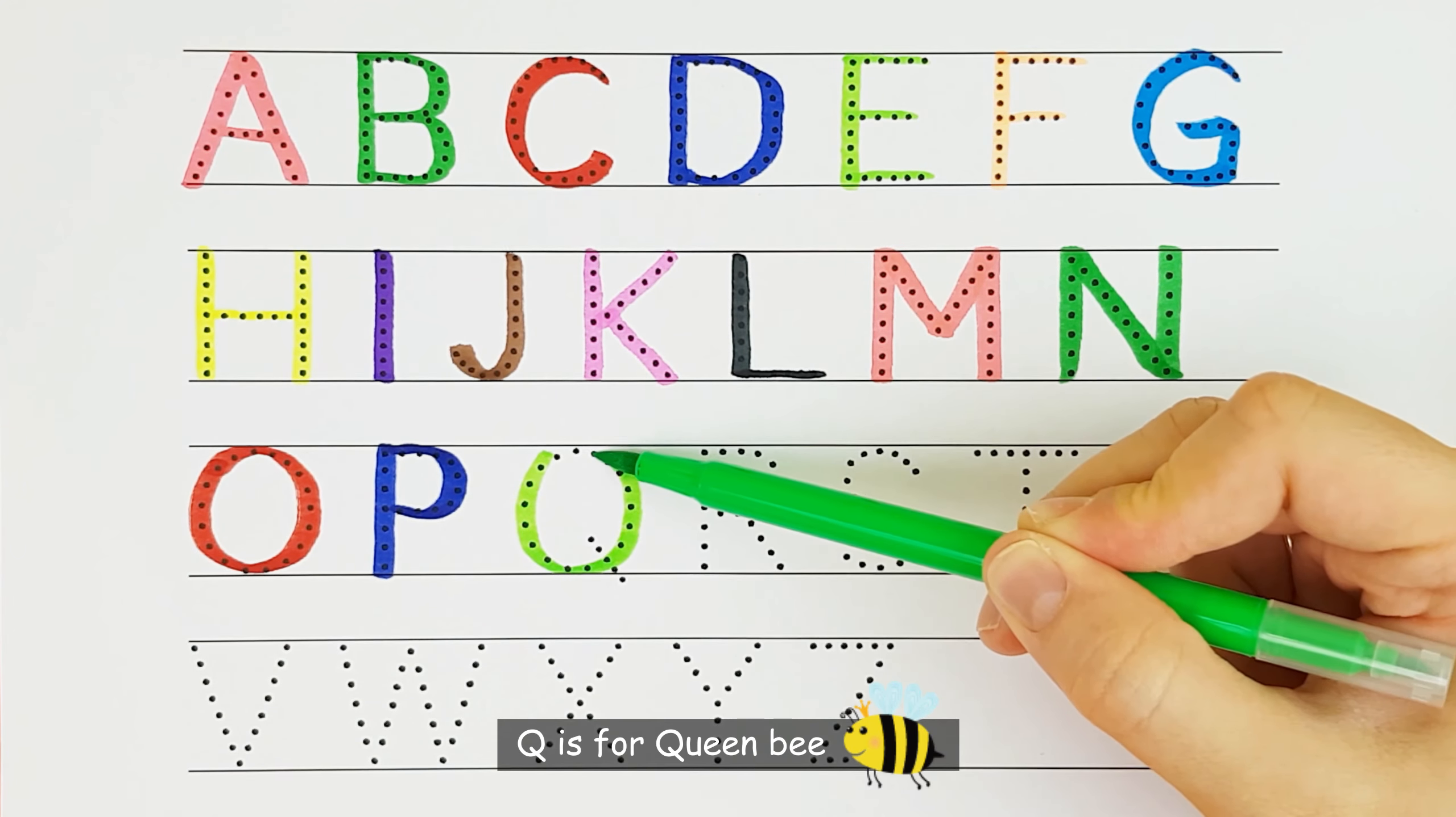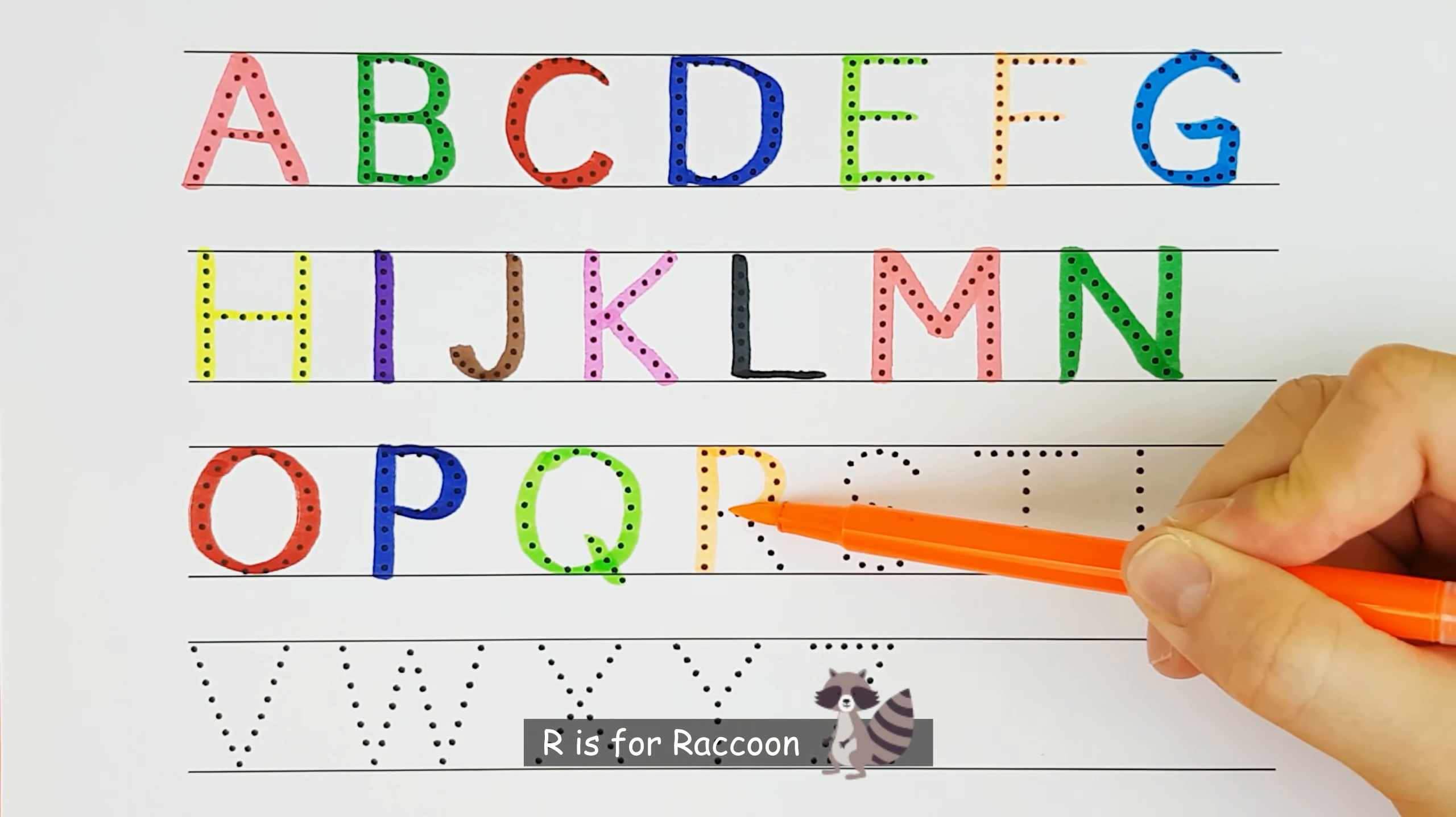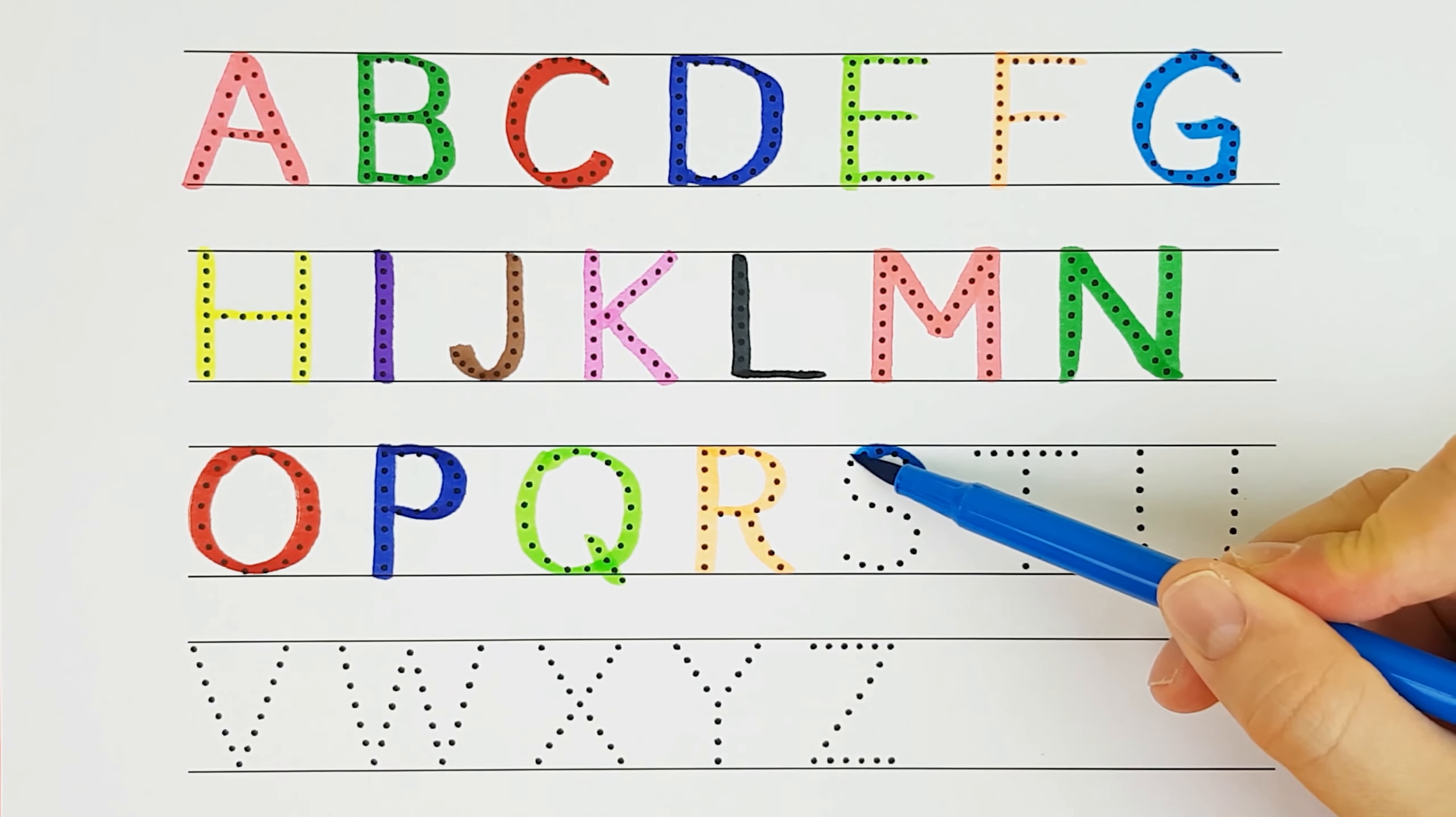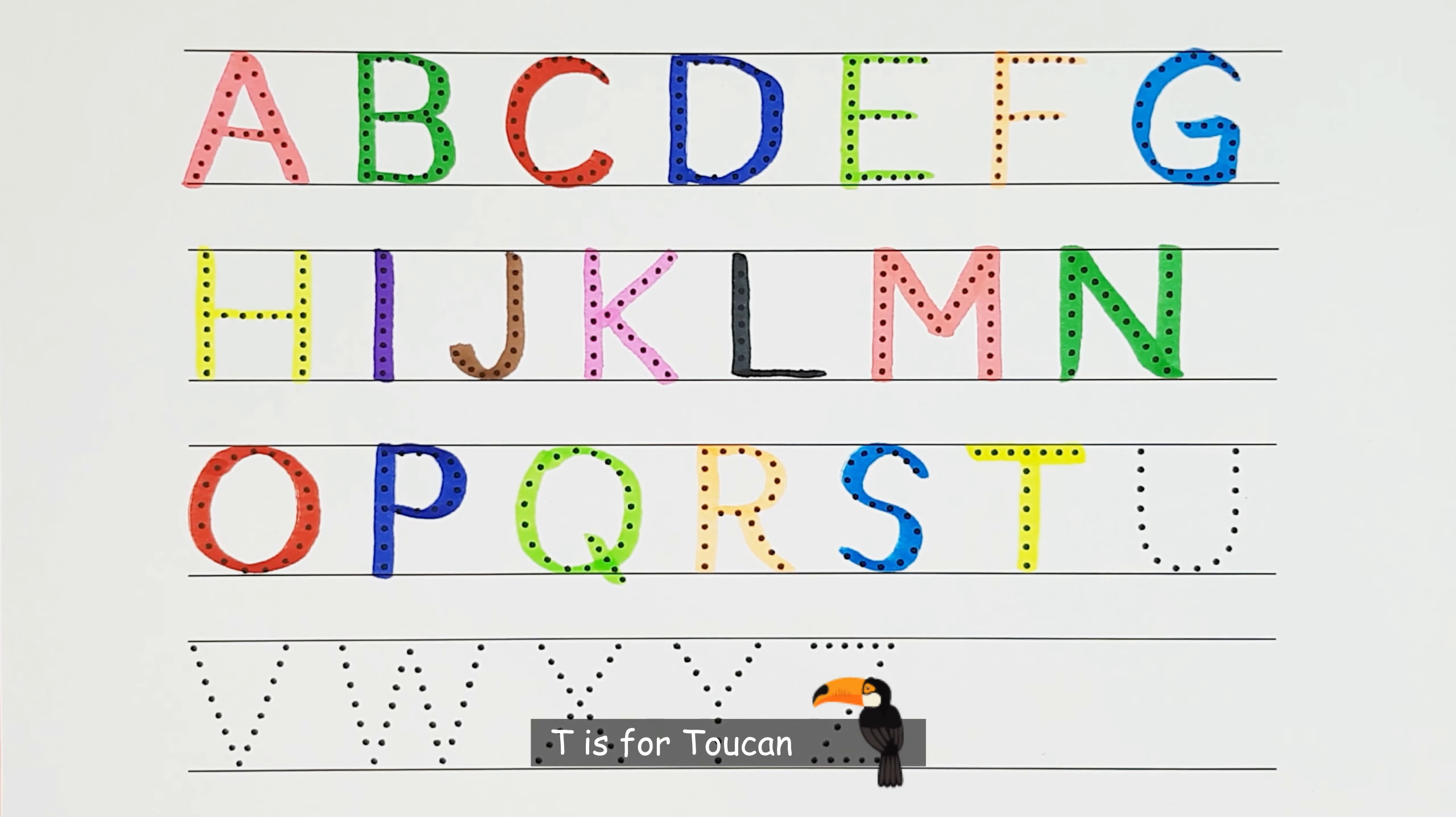Q. Q. Q is for Queen Bee. Q. R. R. R is for Raccoon. R. S. S is for Seahorse. S. T. T. T is for Toucan. T.